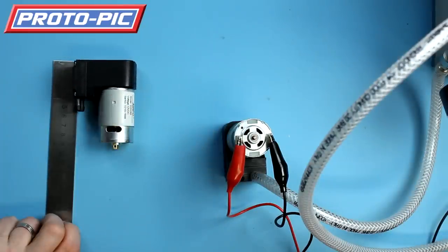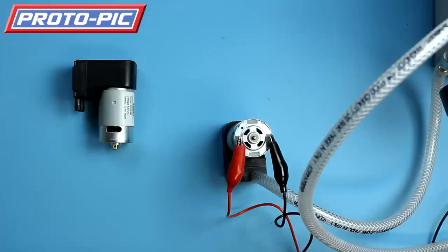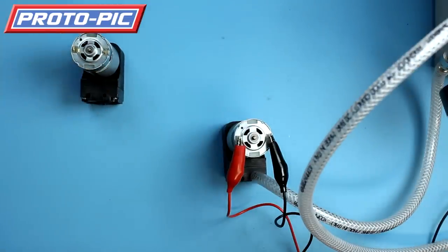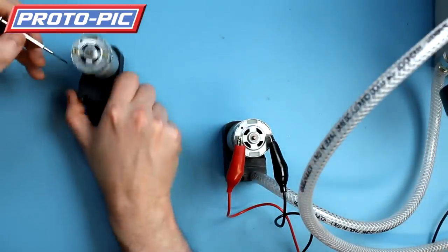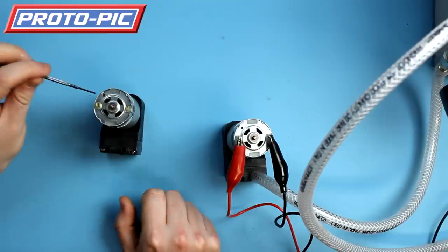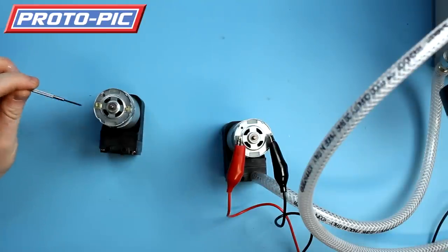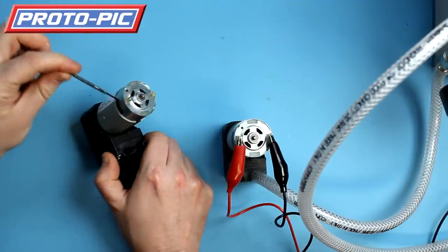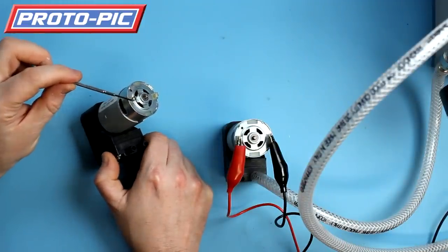The vacuum pump has two terminals, and it's very important to connect your power supply the right way around. You've got a red spot there that indicates this is the positive terminal. This therefore is the negative terminal.